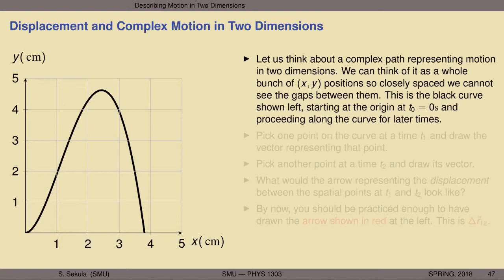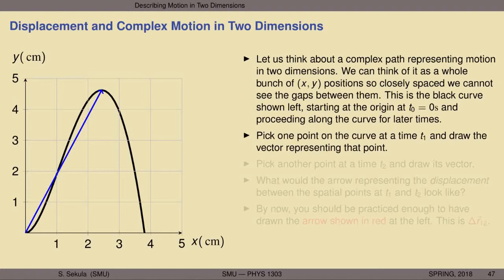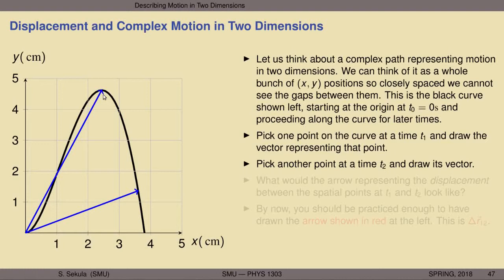Continuing to think about curves representing motion in space, let us pick one point on the curve at some time T1 and draw the vector that represents that point — starting at the origin with its arrowhead at the location on the black curve. Now I pick another point at a different later time T2. We don't know how much later T2 is than T1, but we know this point occurs later in time. I've drawn the vector for space point x2, y2 at time T2.